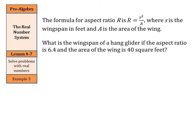Can we use a formula to solve? Sure. The formula for aspect ratio, R, is R = S²/A, where S is the wingspan in feet, and A is the area of the wing. What is the wingspan of a hang glider if the aspect ratio is 6.4 and the area of the wing is 40 square feet? Well, let's write down that original equation. We have R = S²/A.